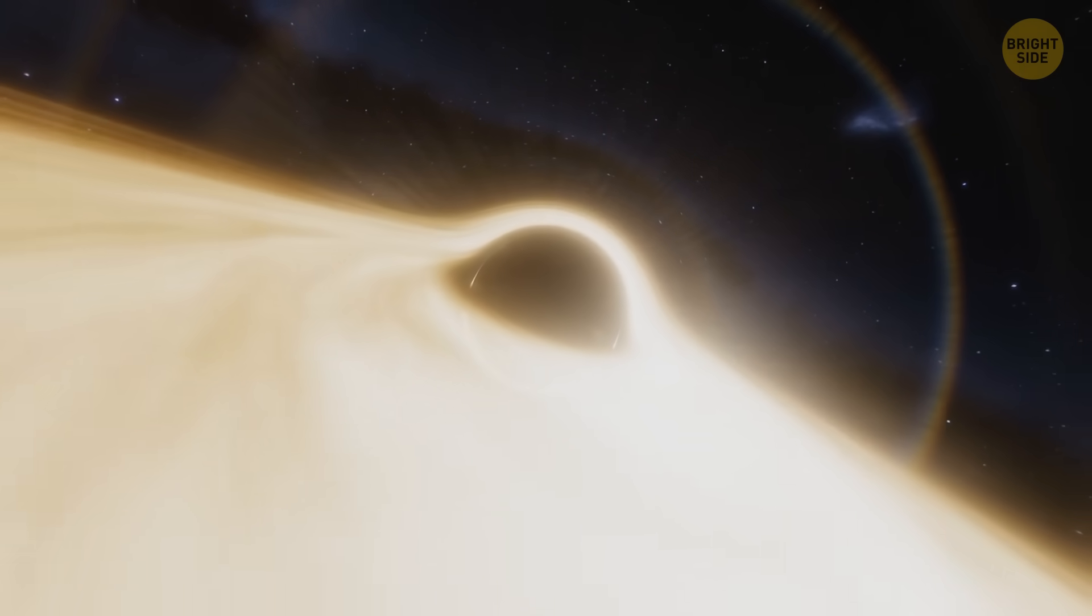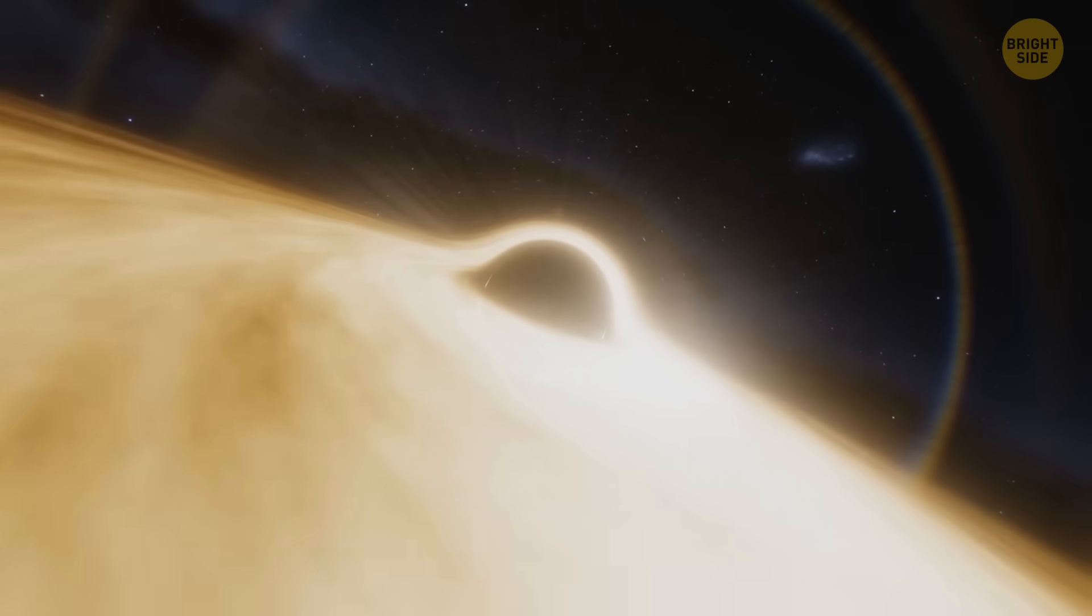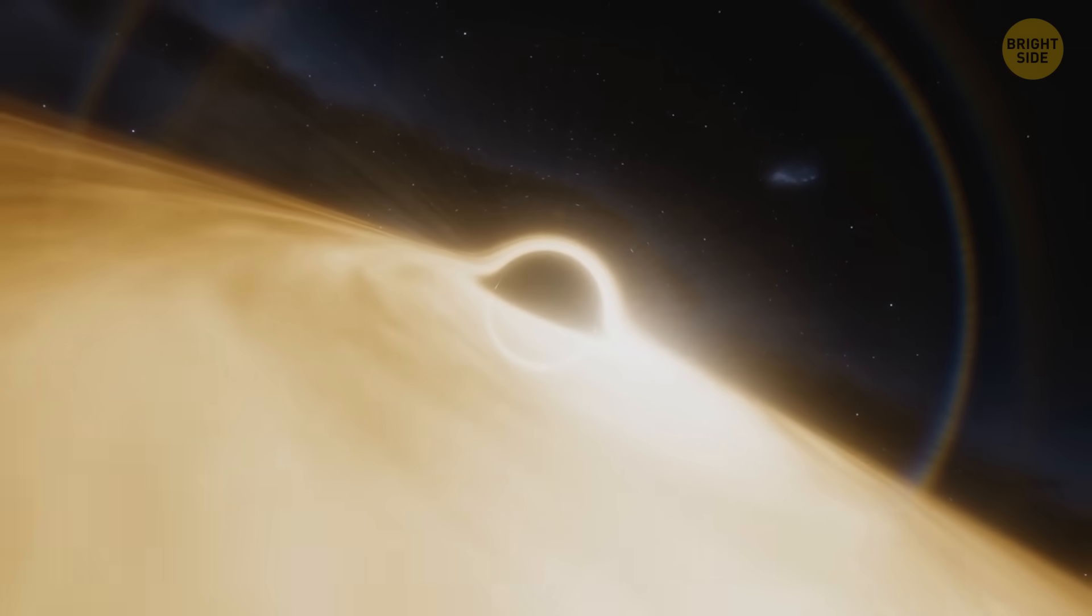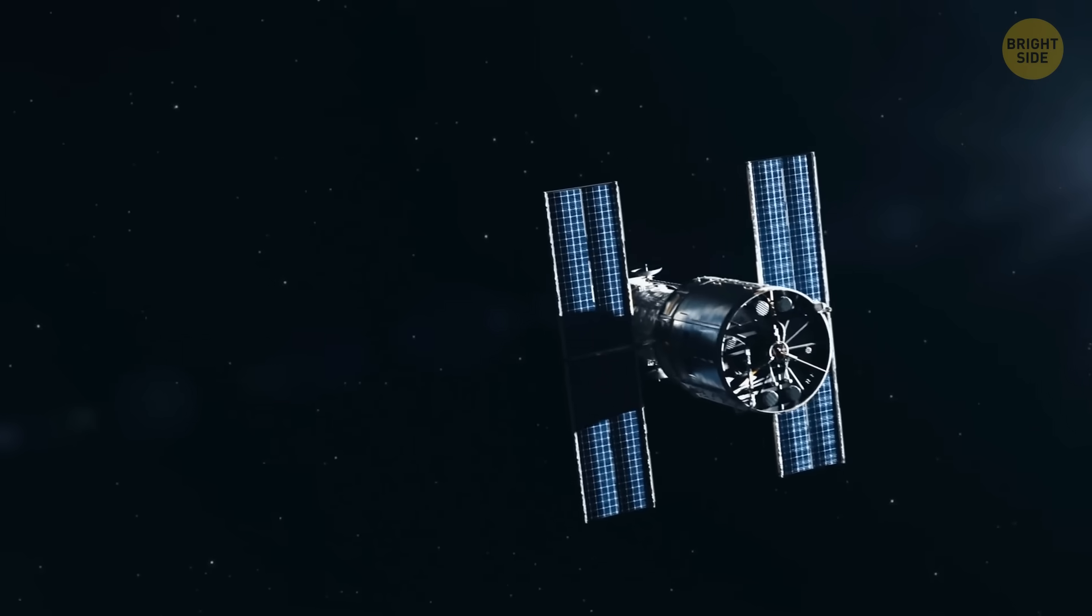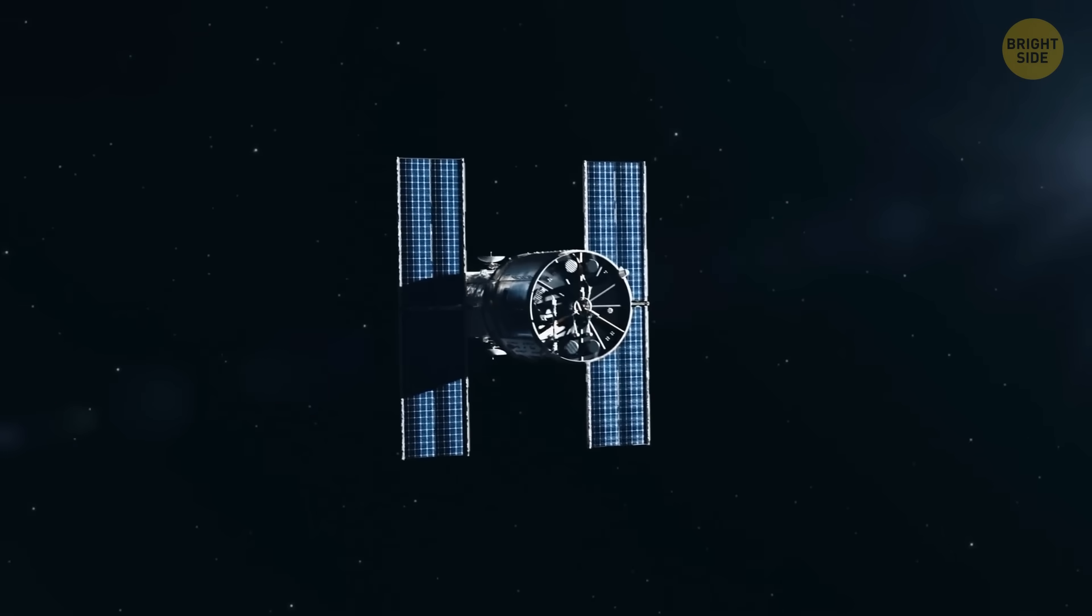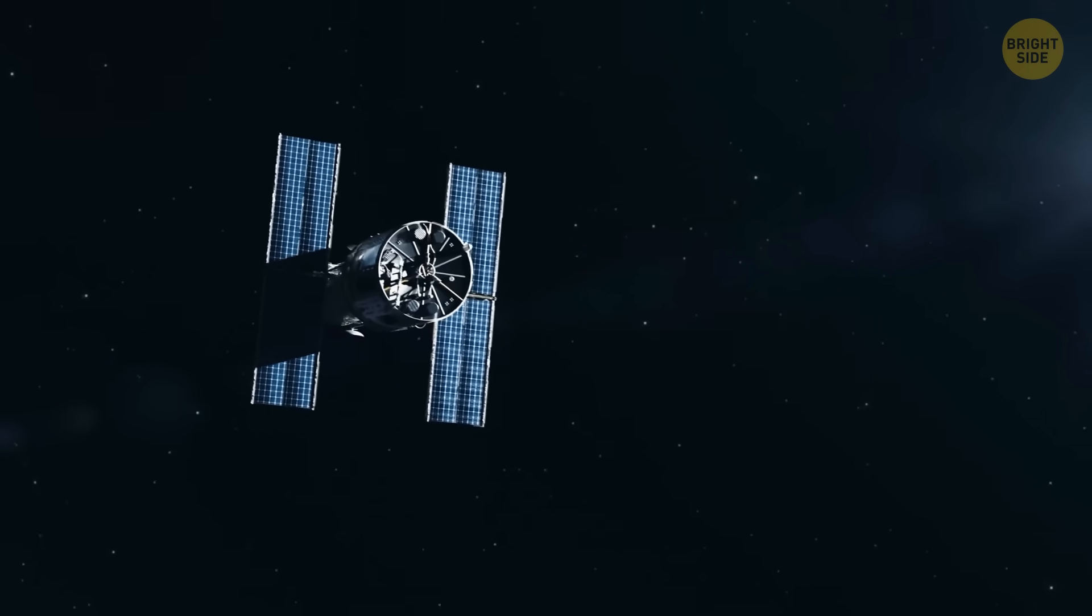If we talk about the recently discovered pair of black holes, it might still take them several hundred million years to crash into each other. But by observing their behavior, scientists can figure out how many binary black holes that are about to collide exist in the universe.